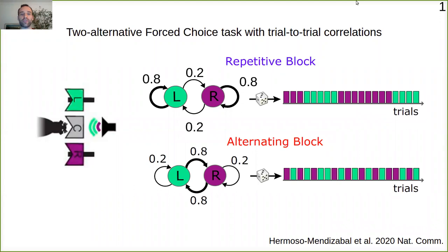In this task we have two main components. One is the stimulus that provides information about whether the reward will be on the left or on the right, and another is that the trials are correlated. We have repetitive blocks in which the probability of repeating the previous trial is higher than 0.5, and alternating blocks in which the opposite is true.